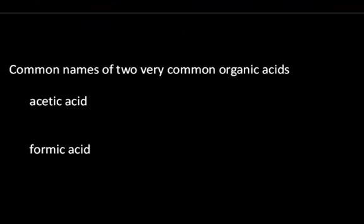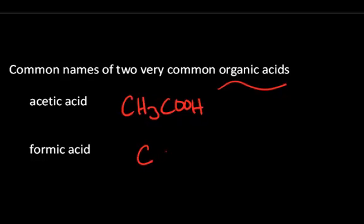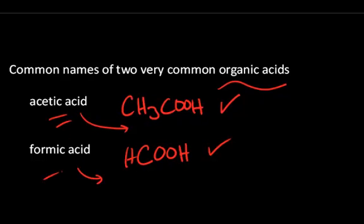Two very common organic acids that you should be familiar with, the formula and the common name, is acetic acid, which is ethanoic acid, which is just CH3COOH. That's acetic acid, and formic acid is methanoic acid, which is just HCOOH. Formic acid, methanoic acid, acetic acid, ethanoic acid. But everyone calls these by their common names, and you should be familiar with the name and the formula of these two very common organic acids.